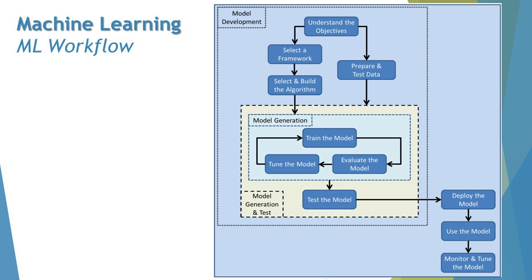The model then enters the model generation layer, which consists of a cyclic tight loop of training the model, evaluating the model, and tuning the model according to deviations. Model generation is about consistently training the model, and based on the training results, we evaluate it. If things are not appearing as per expectation, we tune the model - that is, retrain it - and this continues in a tight cyclic loop until we have accurate outputs.